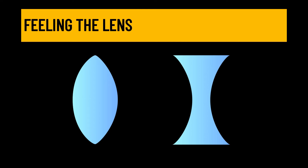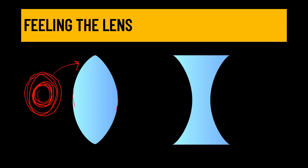Tactile identification is particularly useful when dealing with spherical lenses. A convex lens is thicker at the center and thinner at the periphery. By feeling the lens, if you find it is thicker at the central portion and thinner at the peripheral portion, you are probably dealing with a convex lens. In a concave lens, the thickness is less at the center and more at the periphery. This is called tactile identification of convex and concave lenses.